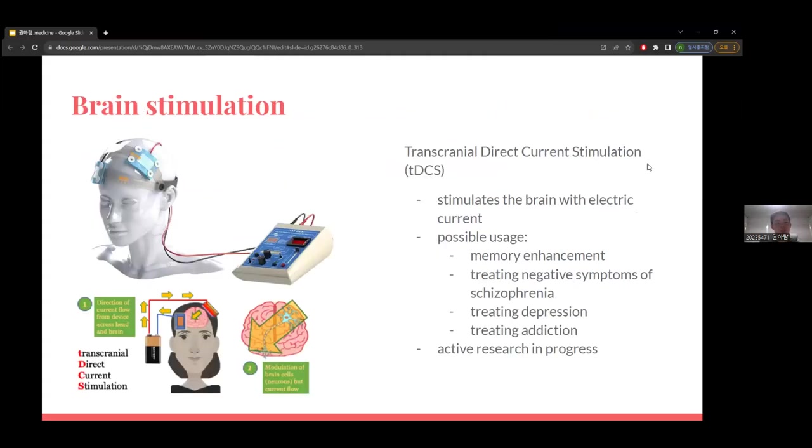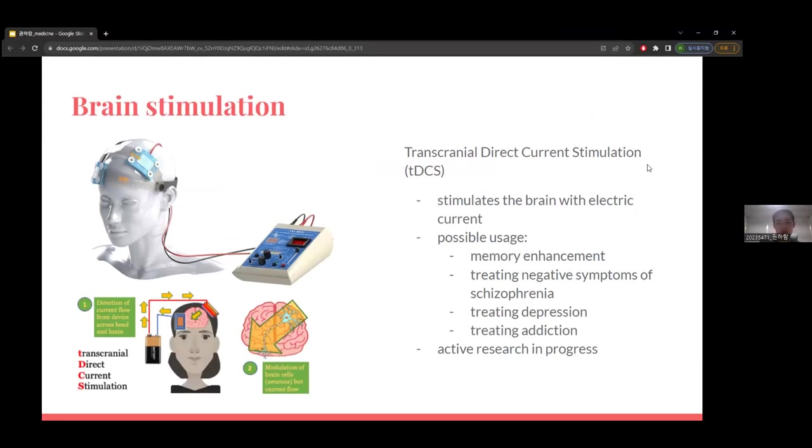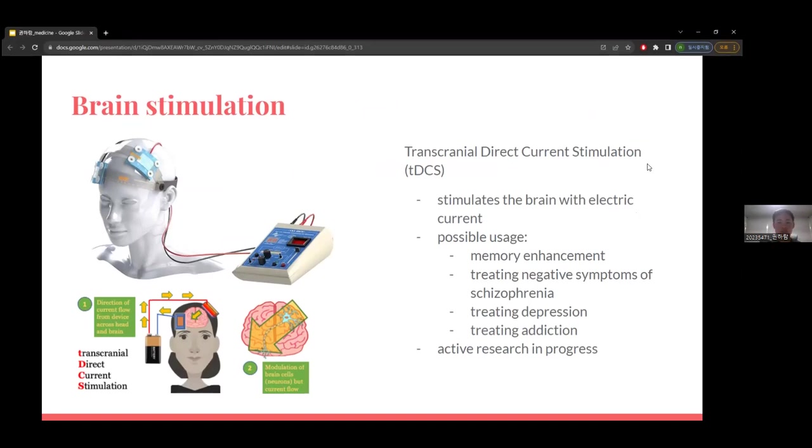One other thing closely related to brain-computer interface is brain stimulation. This technology is called transcranial direct current stimulation, or tDCS. It stimulates the brain with electric current. Research has shown possible usage for memory enhancement, treating negative symptoms of schizophrenia, treating depression, and treating addiction. If you can affect your brain with electric current to enhance memory and control emotion, why not use that?